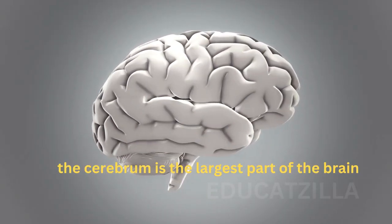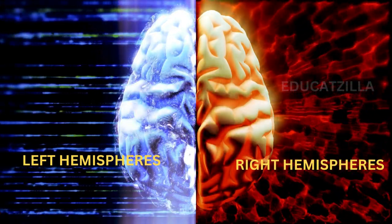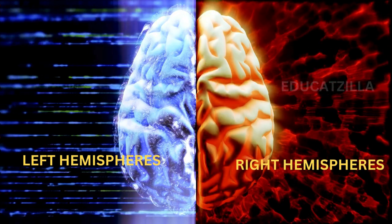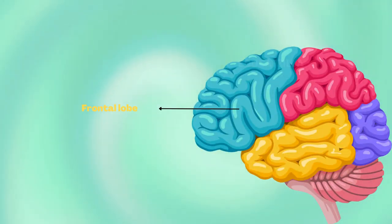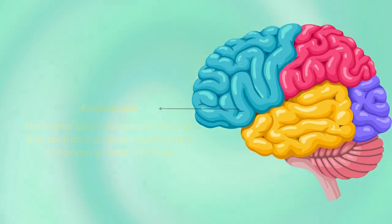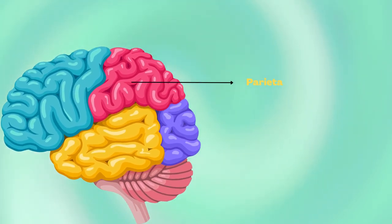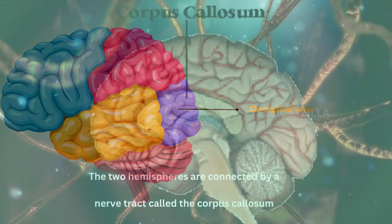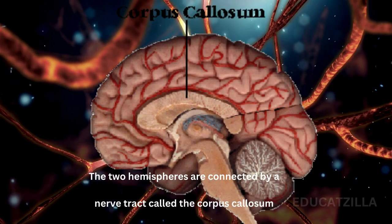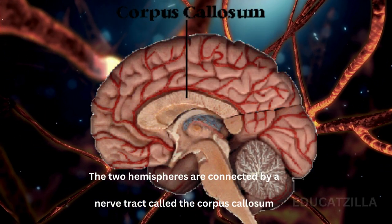The cerebrum is the largest part of the brain and is divided into left and right hemispheres. Each is composed of a frontal, temporal, parietal, and occipital lobe. The two hemispheres are connected by a nerve tract called the corpus callosum.